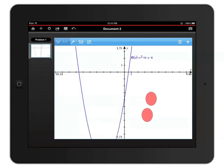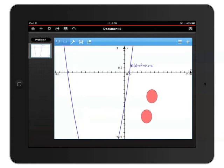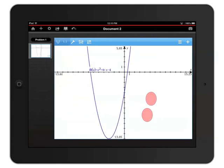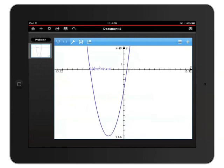To zoom in, place two fingers on the graph and spread them apart. To zoom out, keep those two fingers on the graph and pinch them together. In addition to these common gestures, you can use one finger to touch and hold on the axes of the graph and then drag to rescale.